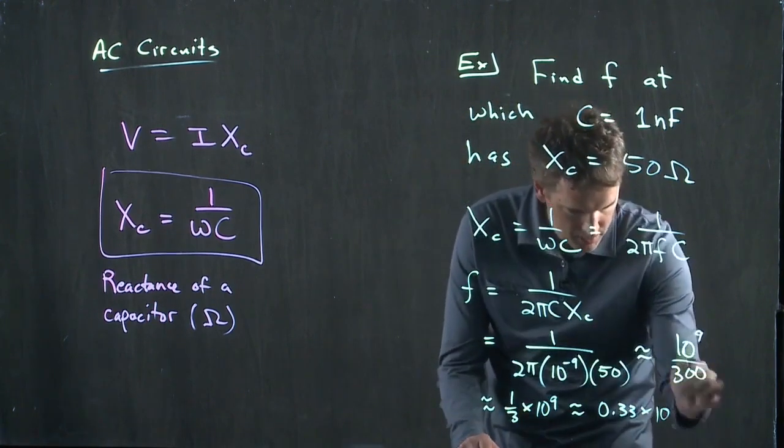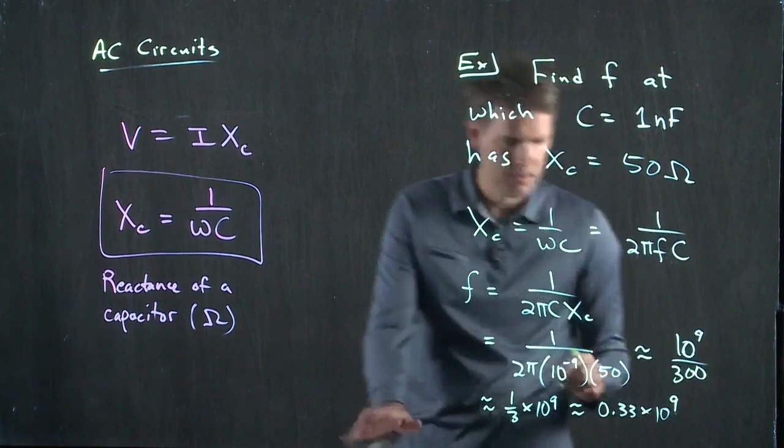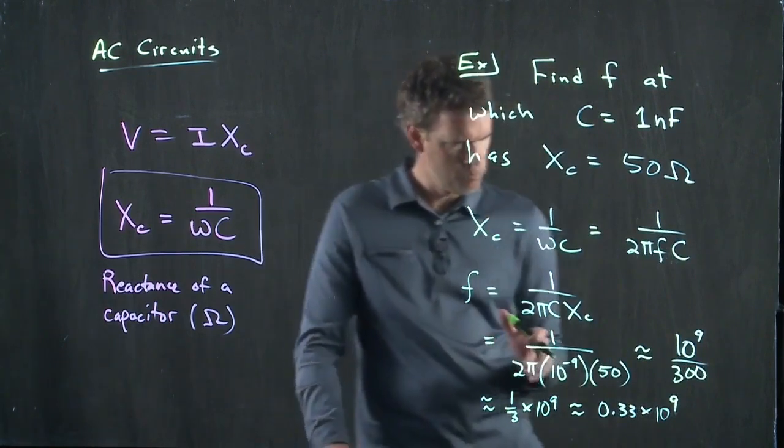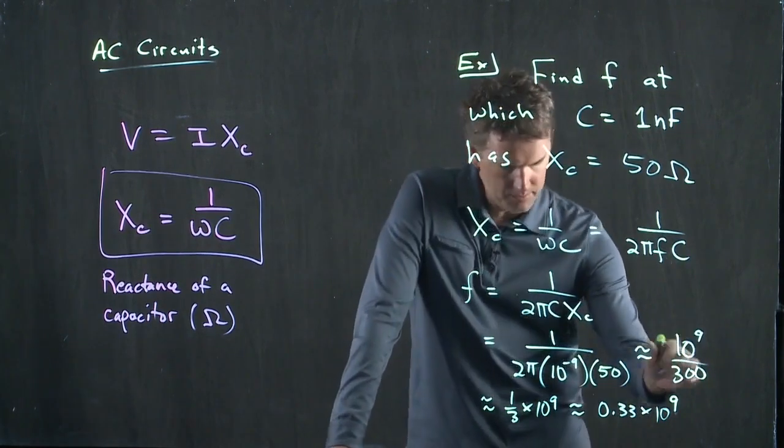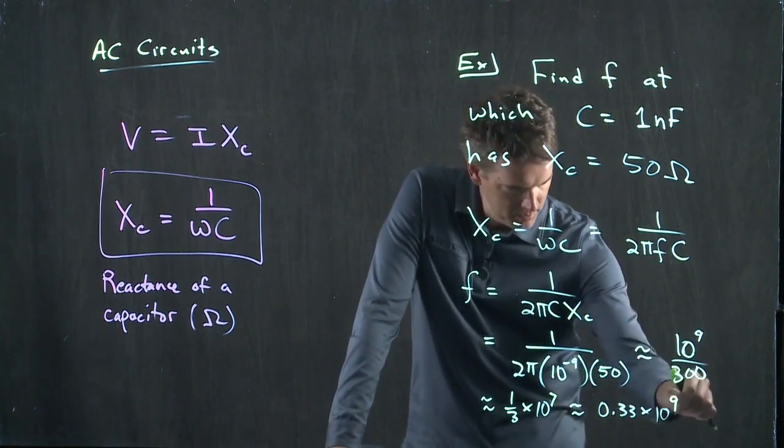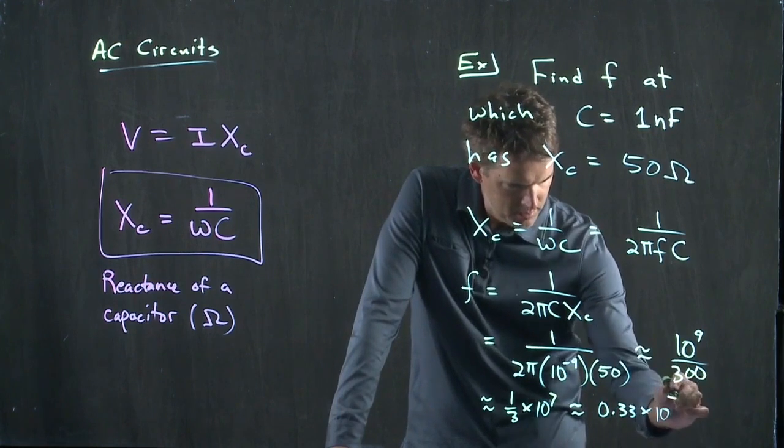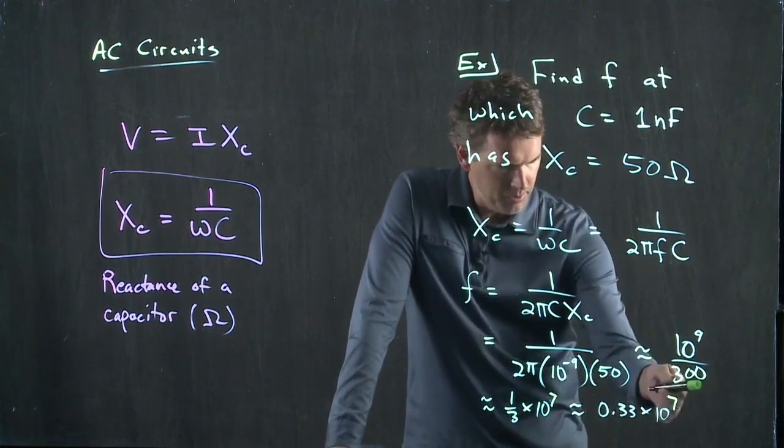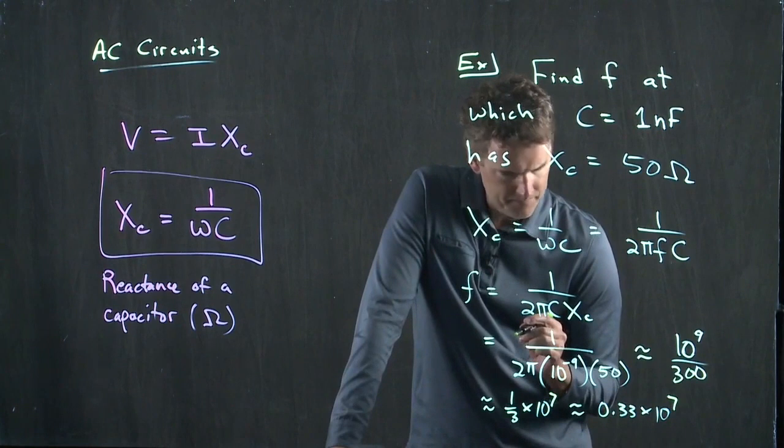Sorry, 10 to the 9. Whoops, hold on. We forgot two zeros here, right? This is 1 over 3 times 10 to the 7, because we had a 300 down there.